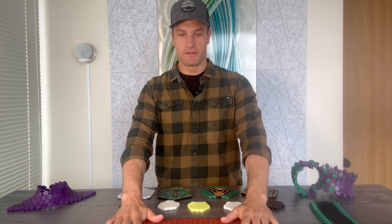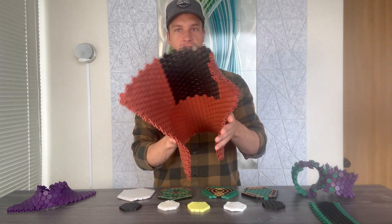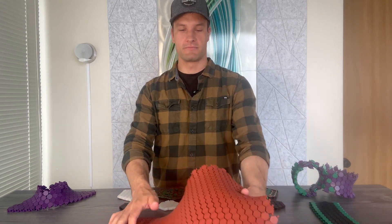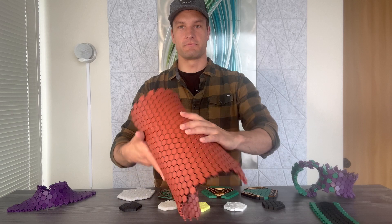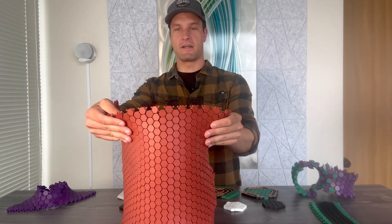So once you start putting it into larger sizes you can start wrapping around a table leg and making a very intricate table that kind of bows out and goes up.